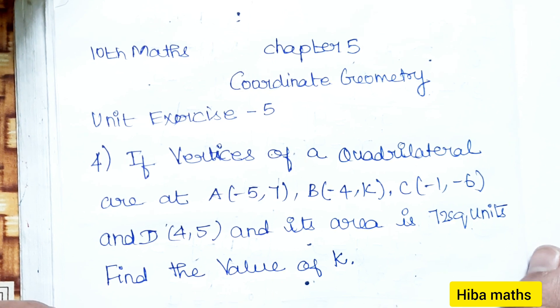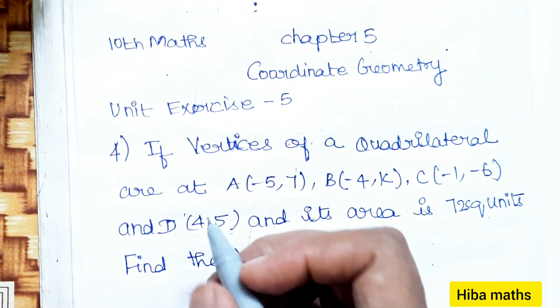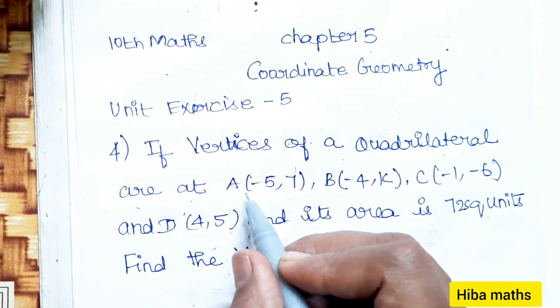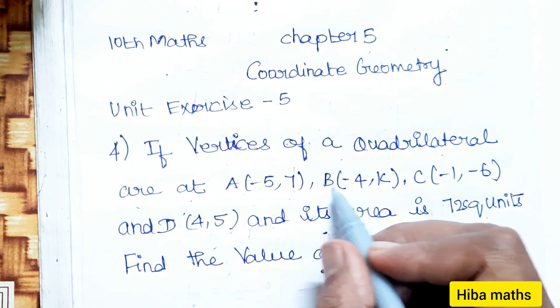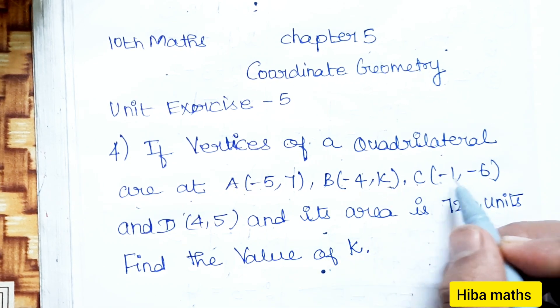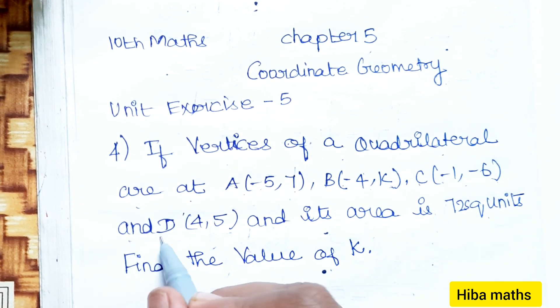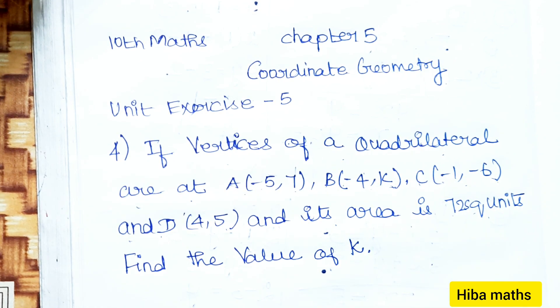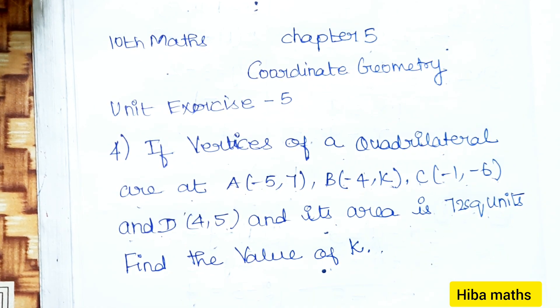4th question: If vertices of a quadrilateral are at A(-5,7), B(-4,K), C(-1,-6) and D(4,5) and its area is 72 square units, find the value of K.